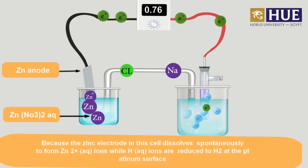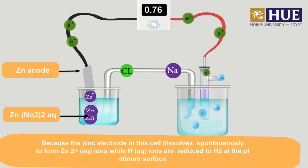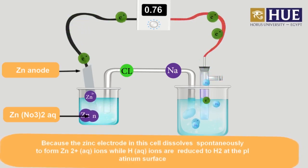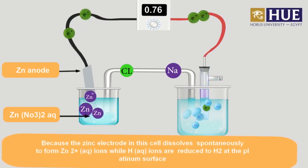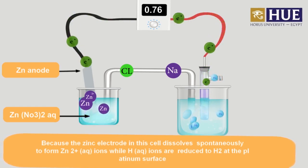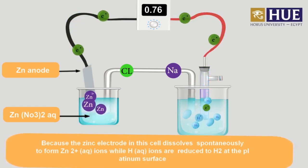The zinc electrode in this cell dissolves spontaneously to form aqueous zinc ions, while aqueous hydrogen ions are reduced to hydrogen gas at the platinum surface.